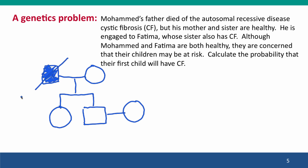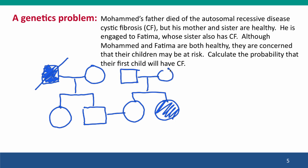His father died of cystic fibrosis — you can even draw a line through to indicate that he's dead. Fatima is healthy, but her sister has cystic fibrosis. So we'll draw her parents too — there's her father and her mother. Now we've summarized all of this paragraph. What it's asking us to find is the probability that their child, whose gender we don't know, will be affected by cystic fibrosis. This diagram summarizes all the information we're given and also provides a structure on which we can annotate our reasoning about the relationships.